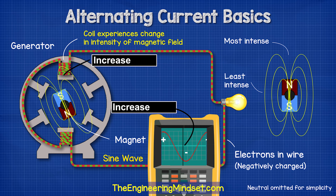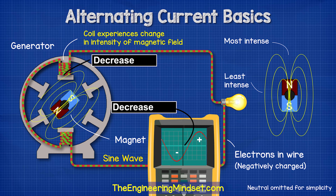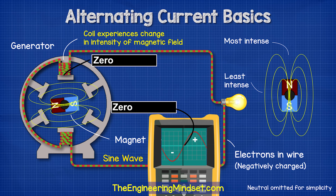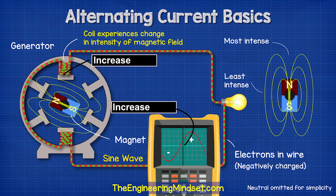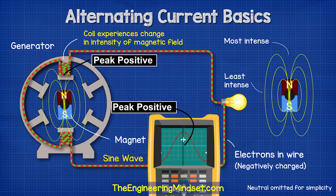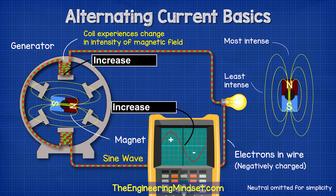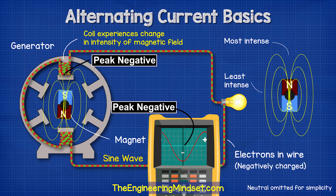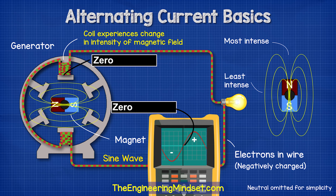The voltage is not constant in this type of electricity. Instead, it repeatedly moves from zero up to its peak, back to zero, then to the negative peak, and then finally back to zero again.